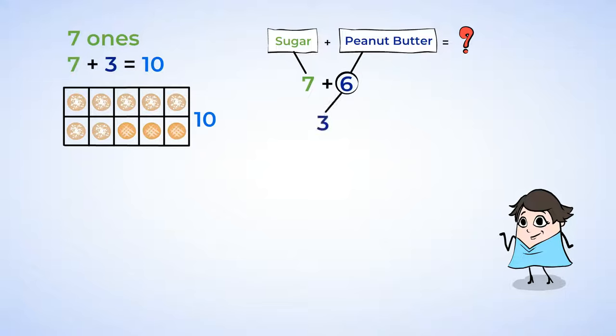You can take 3 from the peanut butter cookies to make a 10. You have 6 peanut butter cookies, so if you take 3, then you know you have 3 more because 3 plus 3 is 6. Now you can make a 10 because 7 plus 3 is 10.